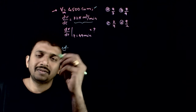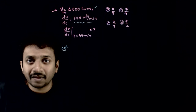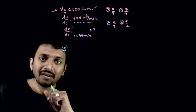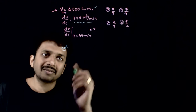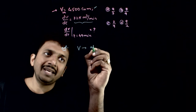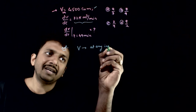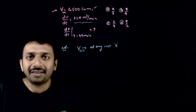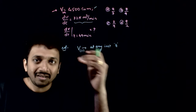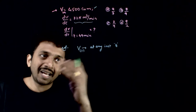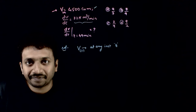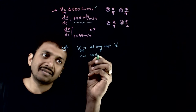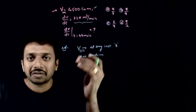How do we do this question? This is a basic rate of change question. Let us assume that V-initial is equal to 4500 cubic meters — that is given. Let V be the volume at any instant T. As T is changing, V is changing; V is a function of T. The volume of the balloon is changing because the air is escaping, so the volume at any time T is a function of T. And at that instant T, let R be the radius. This radius is also decreasing as the volume is decreasing.